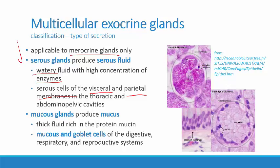Mucous glands produce the secretion mucus. Note that as an adjective it's spelled M-U-C-O-U-S, but as a noun it's M-U-C-U-S — that's not a typo. Mucous glands produce a fluid that is very thick and full of lots of protein, the primary protein being mucin. When you mix mucin with water, that produces mucus. There are two kinds of glands that produce mucus: mucous glands associated with the epithelia of the digestive, respiratory, and reproductive systems, as well as goblet cells. This is one last means of classifying multicellular exocrine glands — by the kind of secretion they produce.